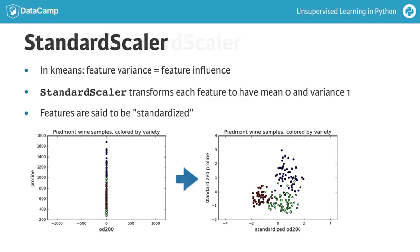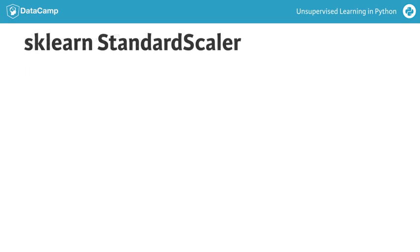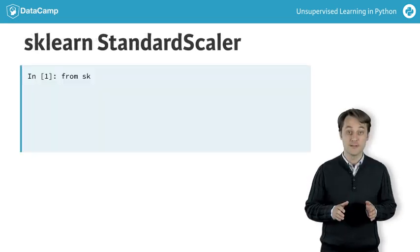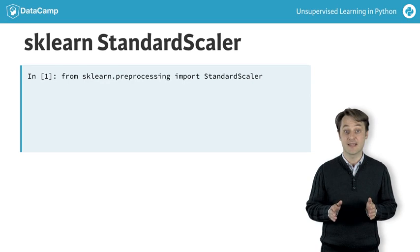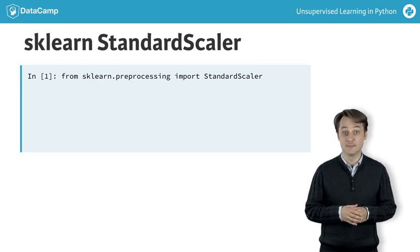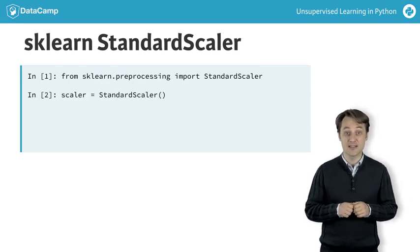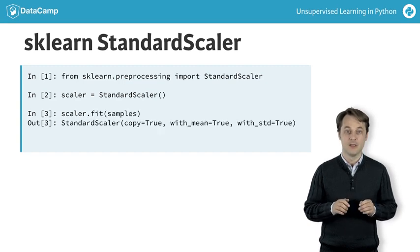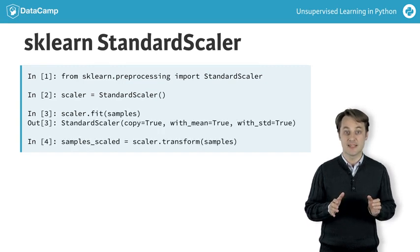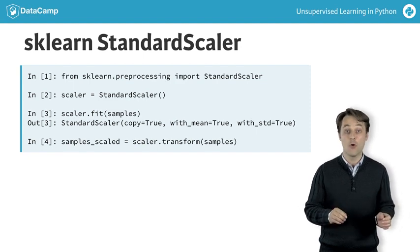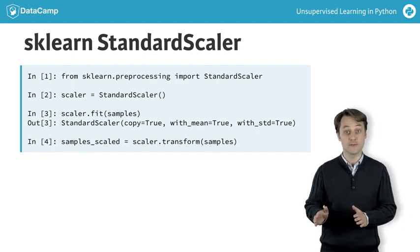Let's see the StandardScaler in action. First, import StandardScaler from sklearn.preprocessing. Then create a StandardScaler object and fit it to the samples. The transform method can now be used to standardize any samples, either the same ones or completely new ones.